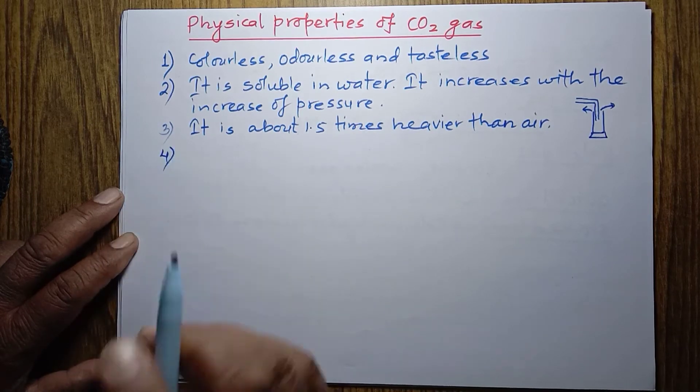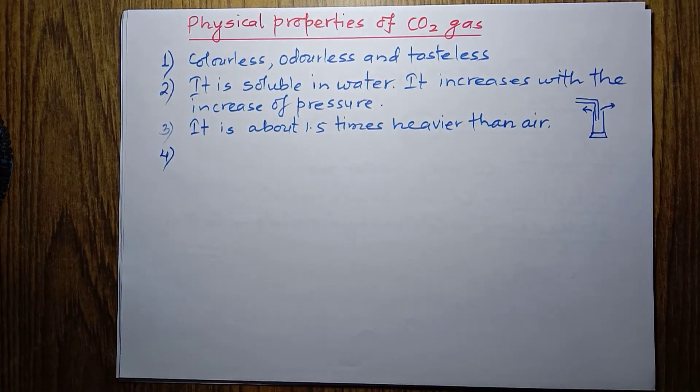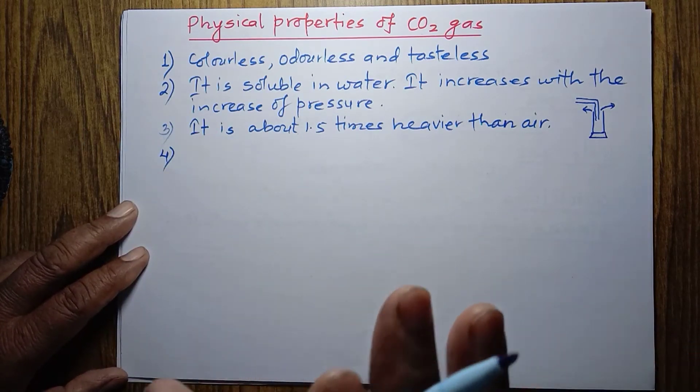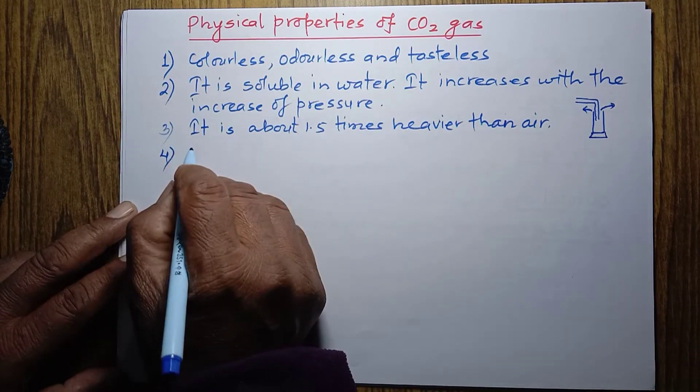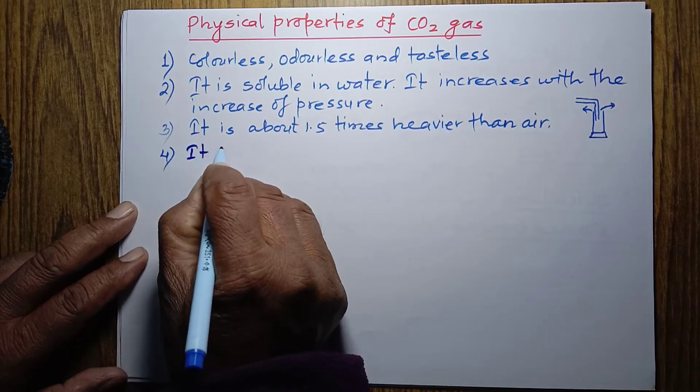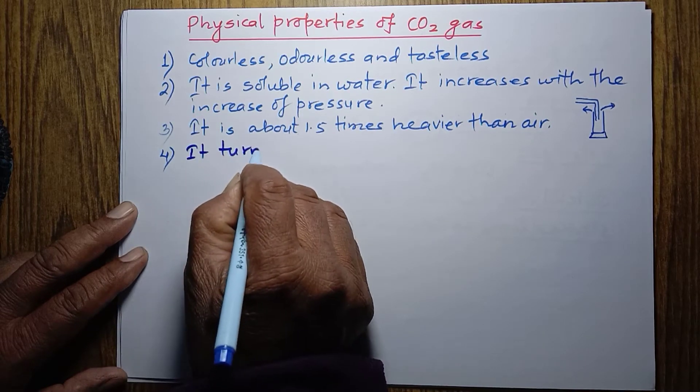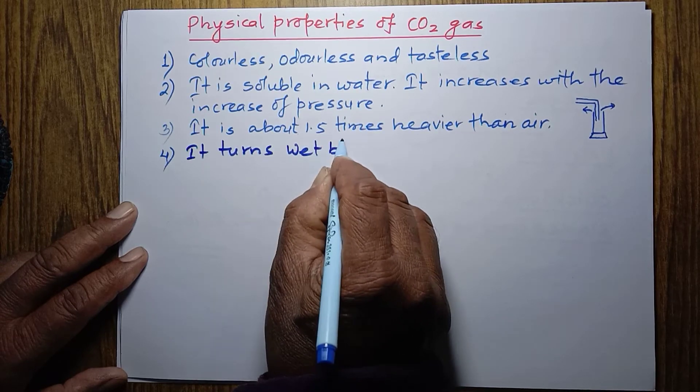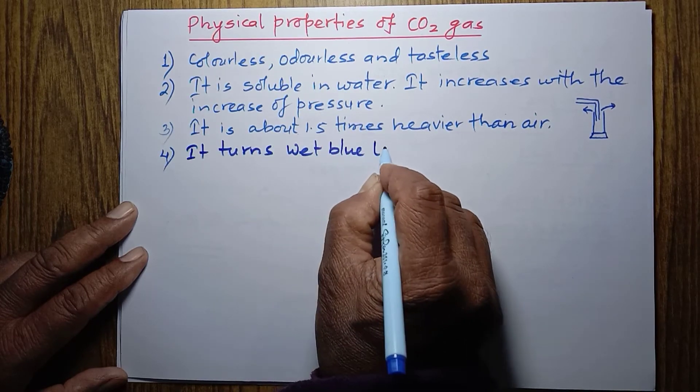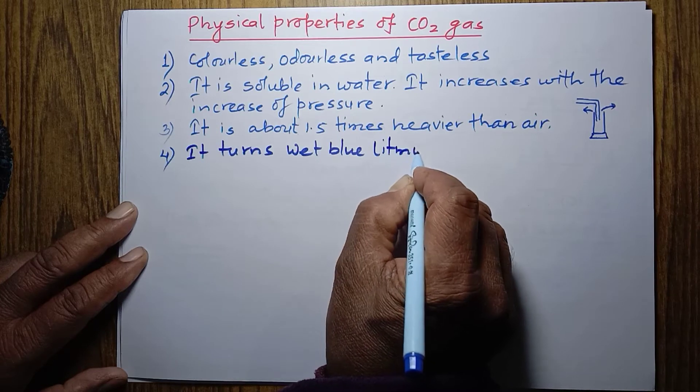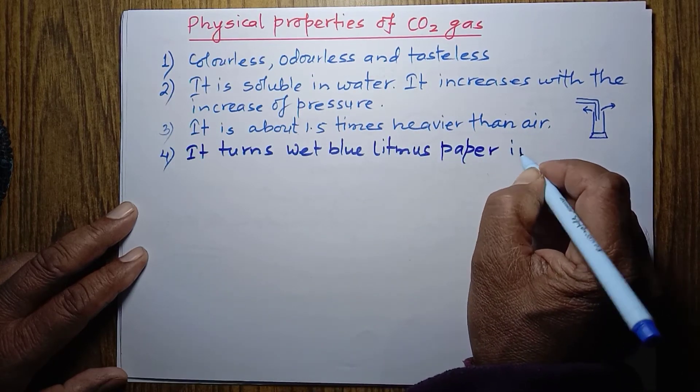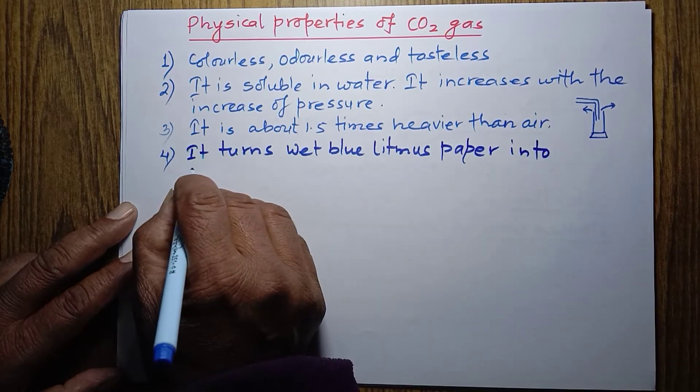Now, another point. Let's talk about the fourth point. It turns wet blue litmus paper into red.